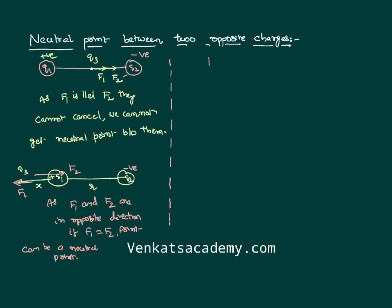The condition for a neutral point is that the force between the first charge and the third charge equals the force between the third charge and the second charge. Using Coulomb's inverse square law: (1/4πε₀) × (q1·q3/x²) = (1/4πε₀) × (q3·q2/(d+x)²).